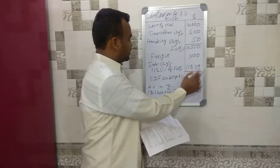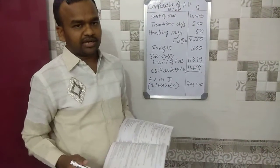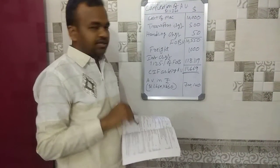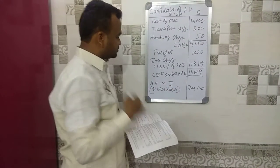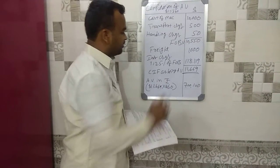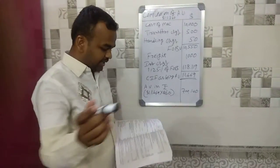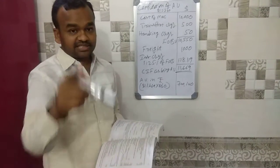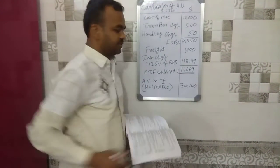We arrive at a CIF value which is the assessable value of $11,669. The assessable value is $11,669. Using an exchange rate of 1 dollar equal to 60 rupees, we convert this to get the final assessable value of 7,140 rupees — wait, the converted value based on that exchange rate.